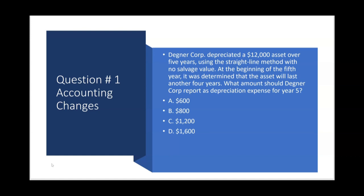Topic number one: accounting changes. The question asks what amount should the company report as depreciation expense for year five, because they're going to change depreciation methods in the middle of the year after having depreciated an asset for several years already. The CPA FAR exam loves this question because instead of just asking straight-line depreciation, they combine it with a change in depreciation method or a change in the useful life of the asset.